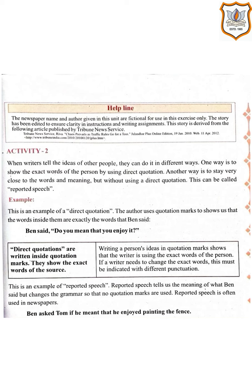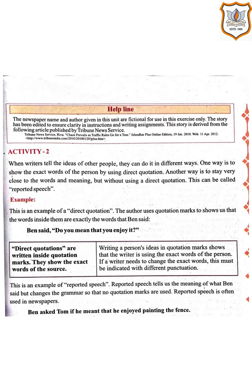The meaning of source is any kind of information which we can get from anywhere — that is a source. Writing a person's ideas in quotation marks shows that the writer is using the exact words of the person. If a writer needs to change the exact words, this must be indicated with different punctuation marks. So whenever you are writing the exact words, they should be in quotation marks.